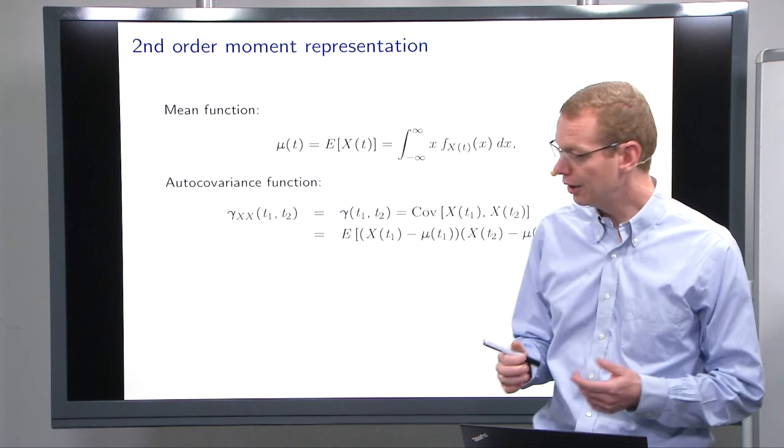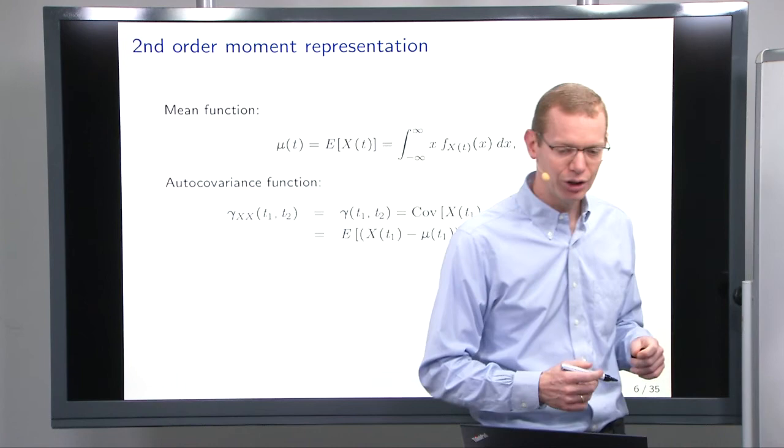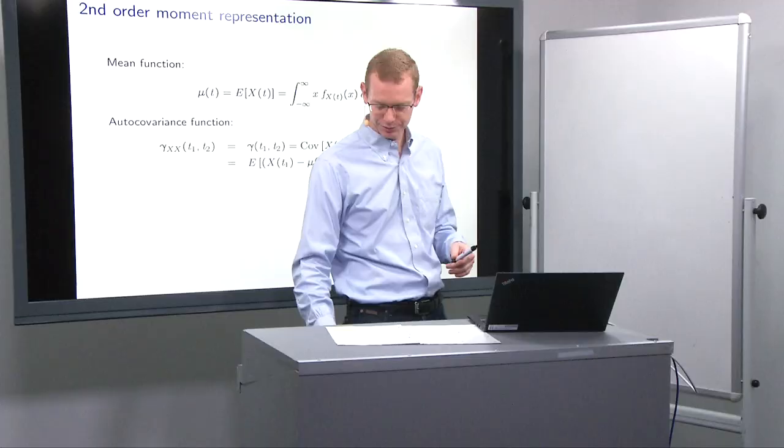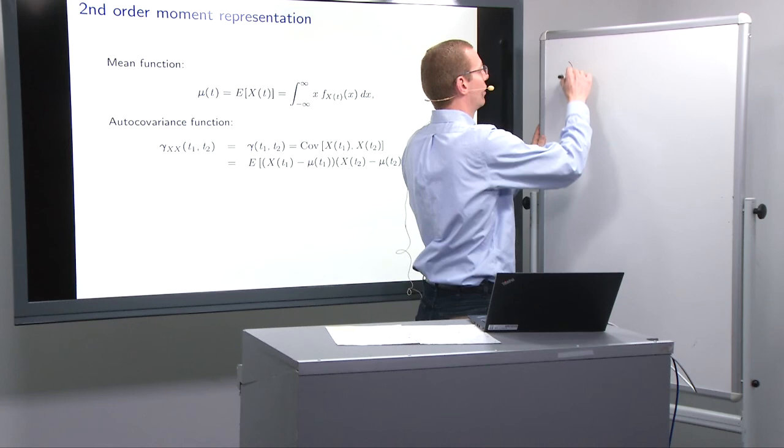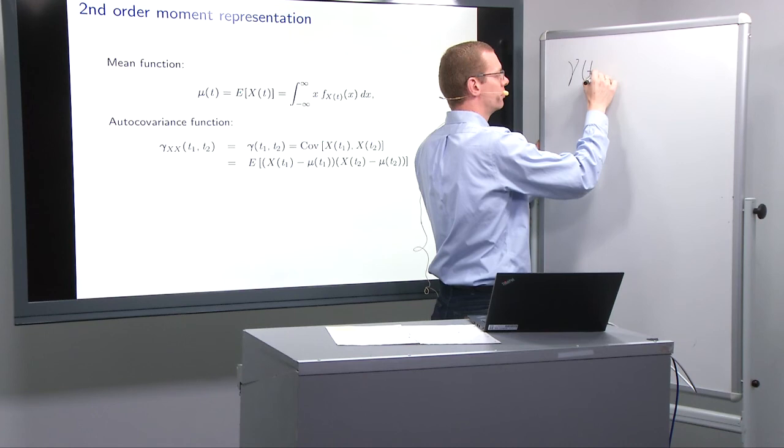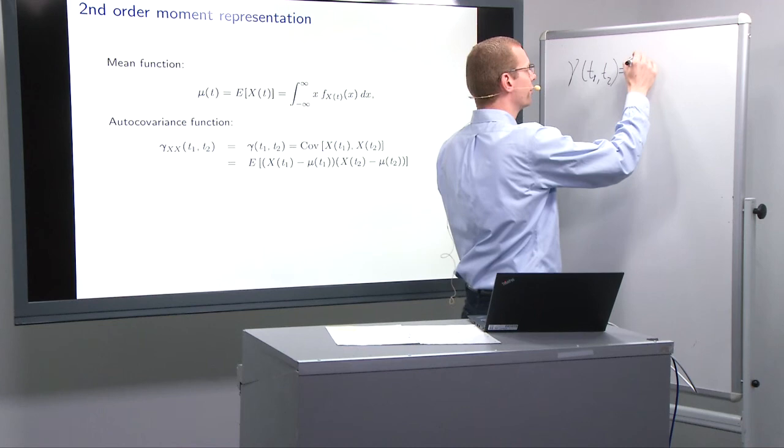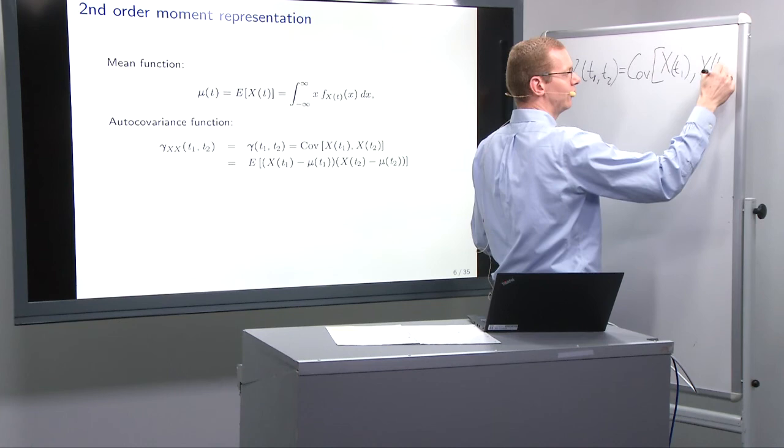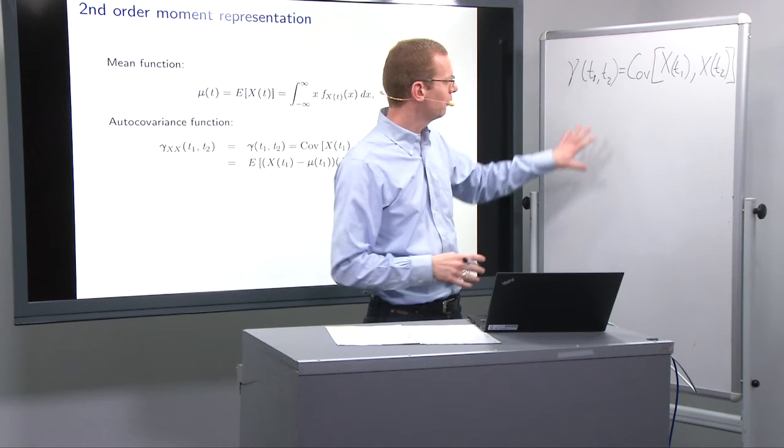Now, so what we're doing here, if we look at this definition, so we have the autocovariance function. I will just leave it out here, so I have it for memory. That we have gamma of t1, t2 is equal to the covariance between x at t1 and x at t2. So that's what we're going to use and keep in mind whenever we're going to look at this.